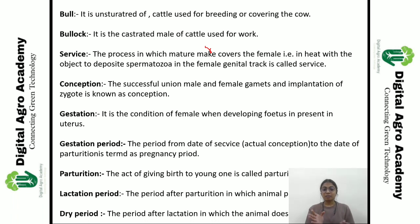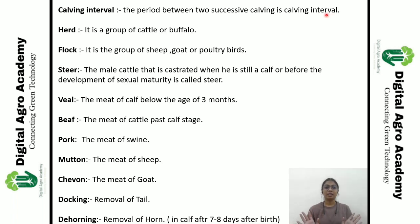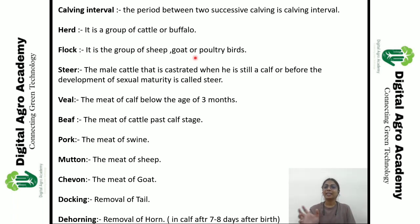Then 'calving interval' — the period between two successive calvings is called the calving interval. A 'herd' is the word used for a group of cattle or buffalo. A 'flock' is the group of sheep or goats, and similarly, poultry birds can also be referred to as a flock.